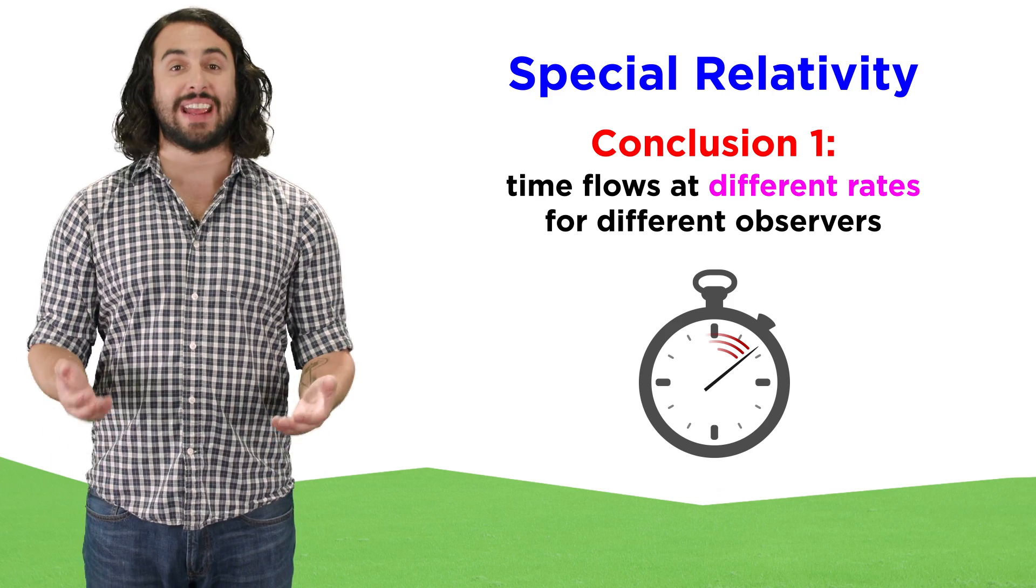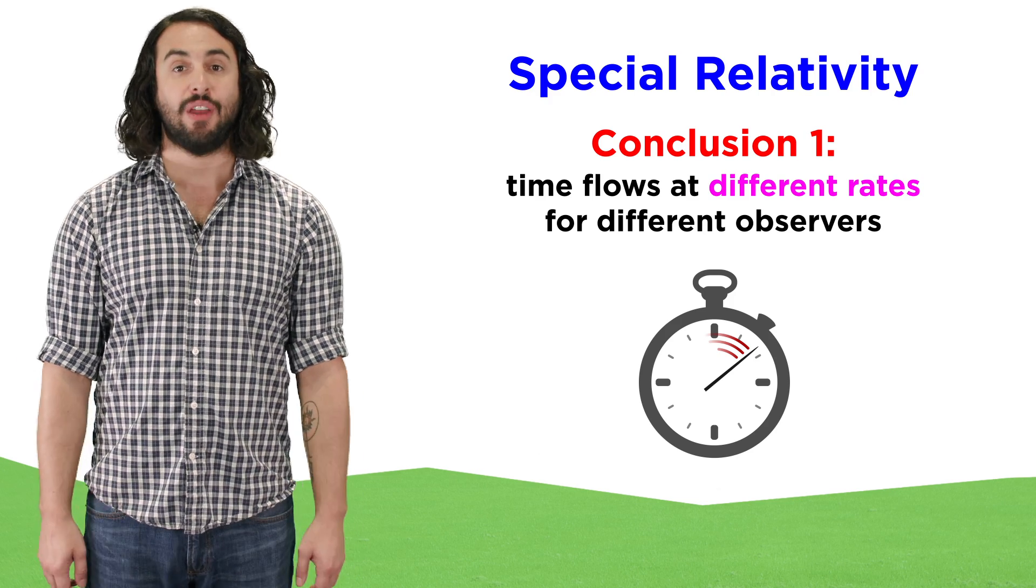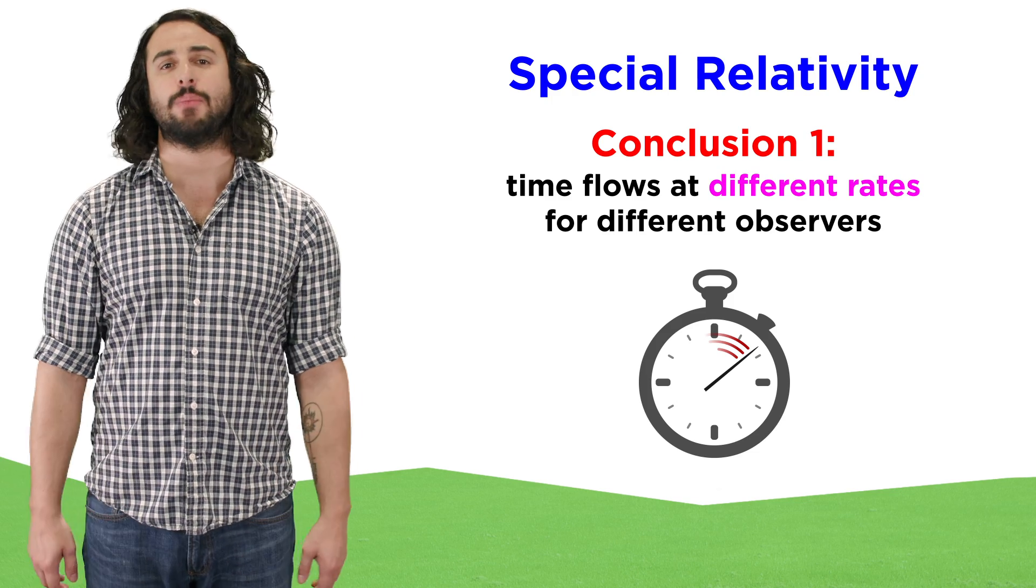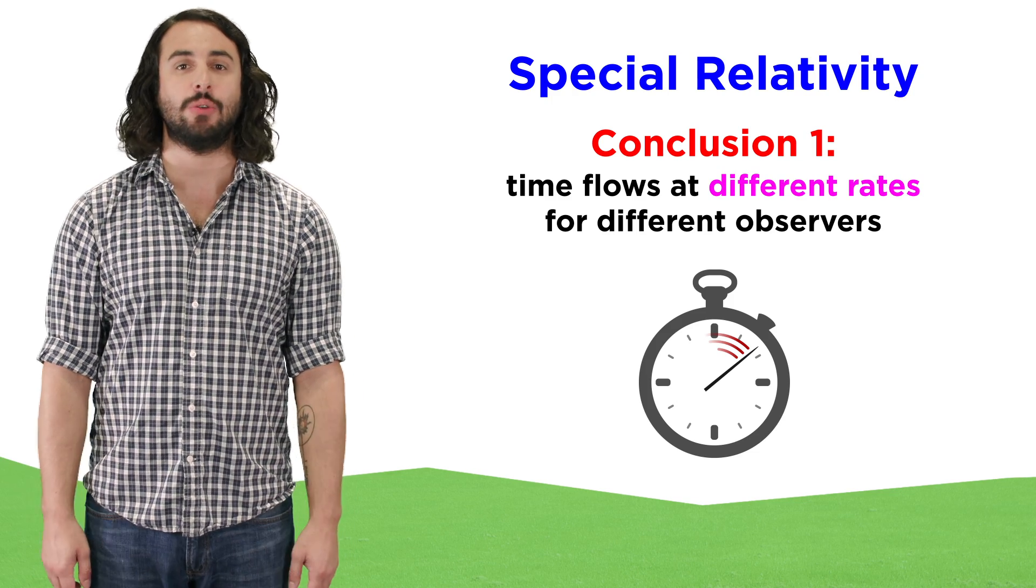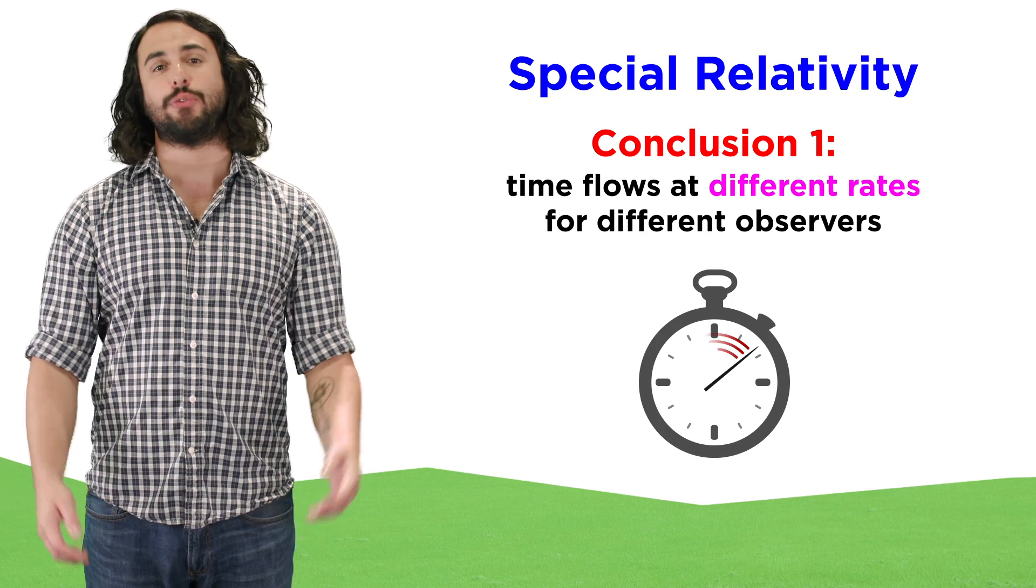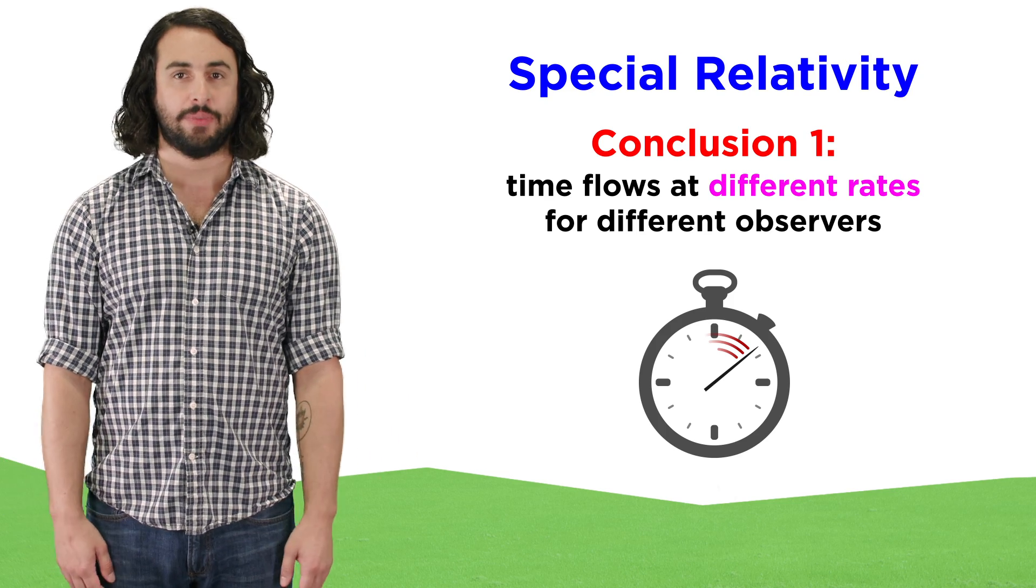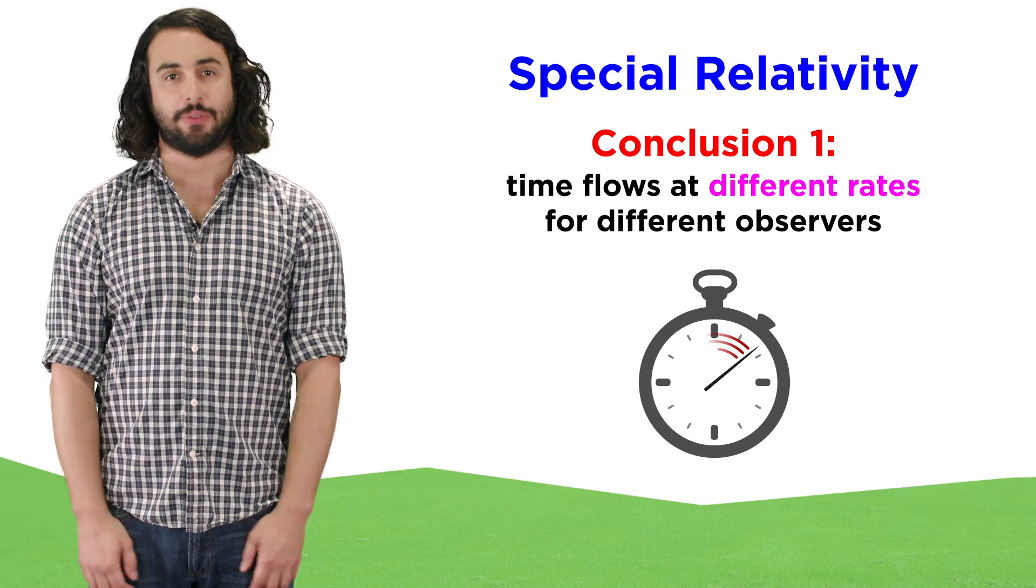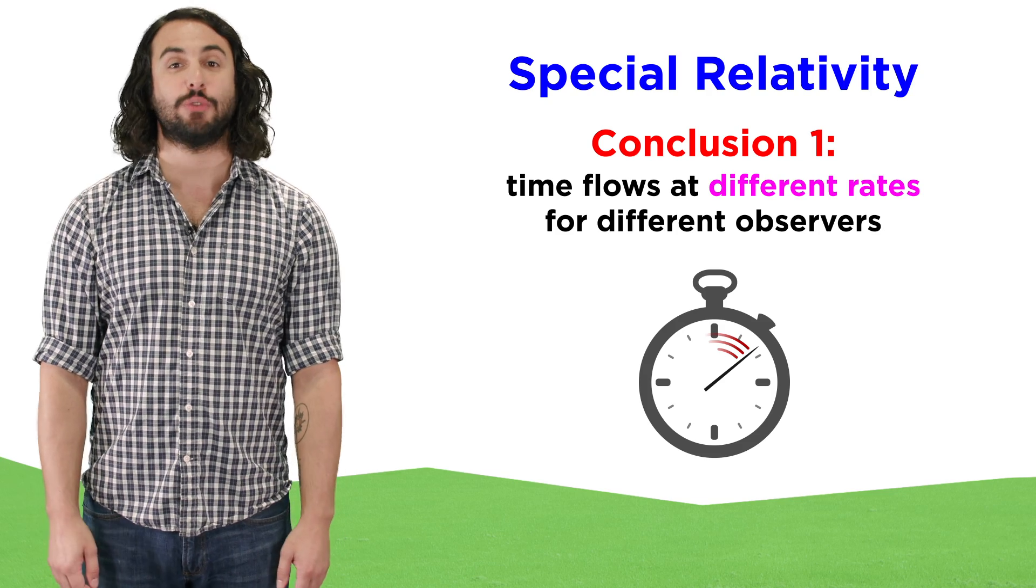This is the first incredible conclusion we can derive from special relativity. Time is not some rigid detached parameter as Newton envisioned. It does not flow at an absolute rate. Time is relative. It flows at different rates for different observers.